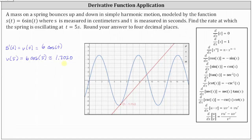Notice how this is verified by the slope of the tangent line. We can see the tangent line does have a positive slope. We now know the spring is oscillating at a rate of approximately 1.7020 centimeters per second at t equals 5 seconds.